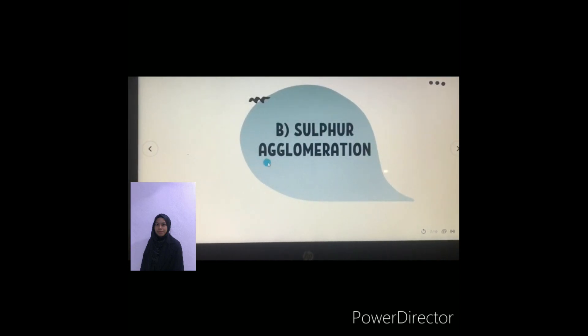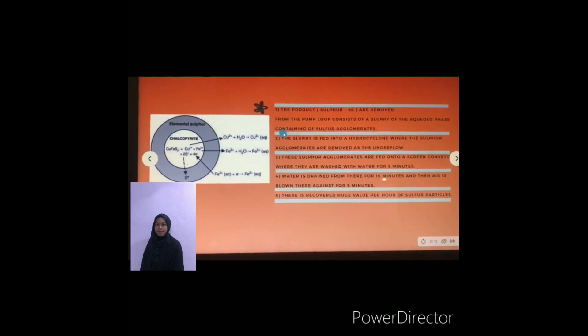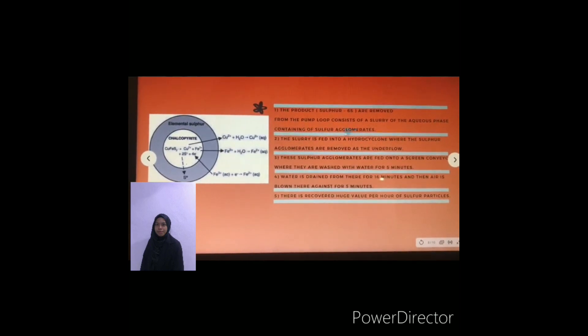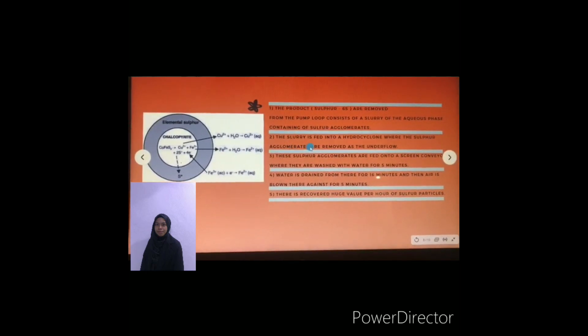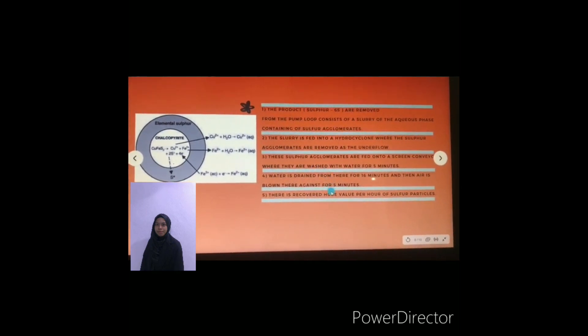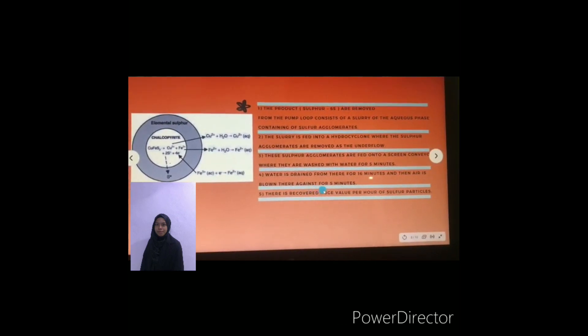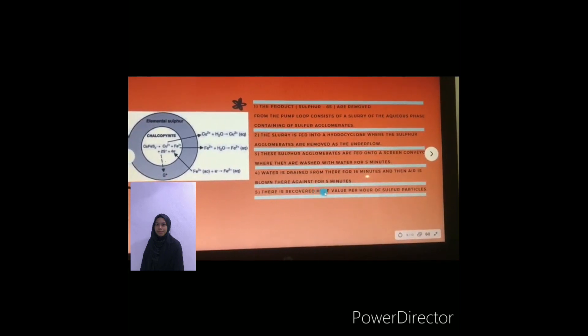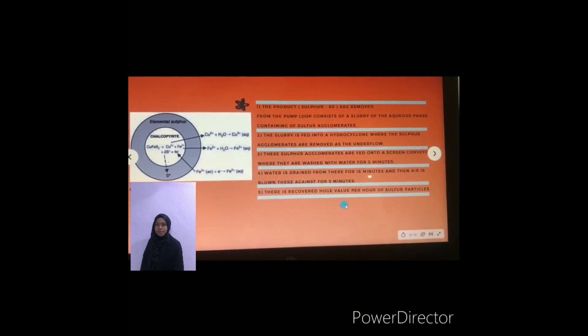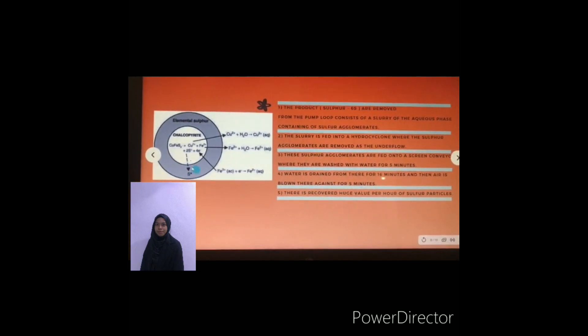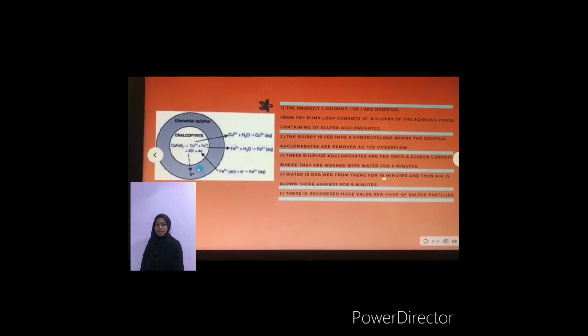The next process is focused on sulfur agglomeration. The sulfur that was produced will undergo sulfur agglomeration. First, the product which is sulfur from the Cymbal consists of slurry containing sulfur aggregates. The slurry is fed into a hydrocyclone where the sulfur aggregates are removed. These sulfur elements are fed into a screen drum where they are washed with water for five minutes. Water is drained from there for 60 minutes, and then air is blown there again for five minutes. There is a recovery of sulfur particles. The purpose of the process is to produce sulfur particles.